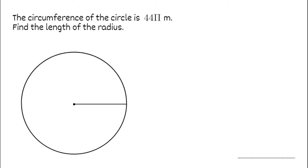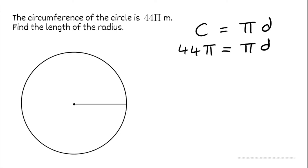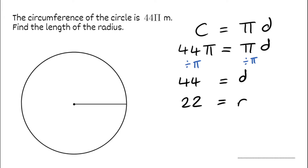For this next question the circumference of a circle is 44π metres and we need to find the length of the radius. We know circumference equals pi multiplied by the diameter, and we're told the circumference is 44π. So 44π must equal pi times the diameter. Dividing both sides by pi, we get the diameter equals 44. To find the radius we simply halve it: half of 44 is 22. So the radius is 22 metres.